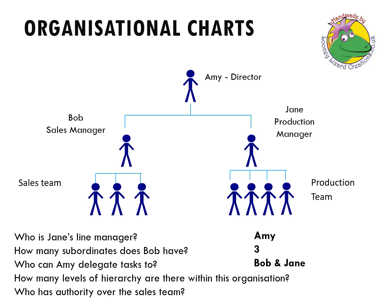How many levels of hierarchy are there within this organization? We can see there are teams, managers, and a director — so three levels. And who has authority over the sales team? That would be Bob.